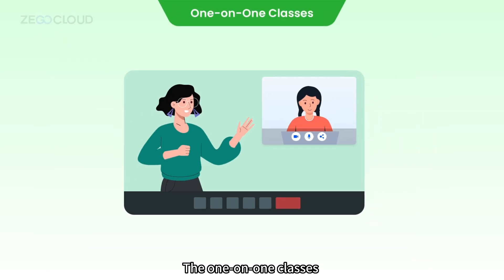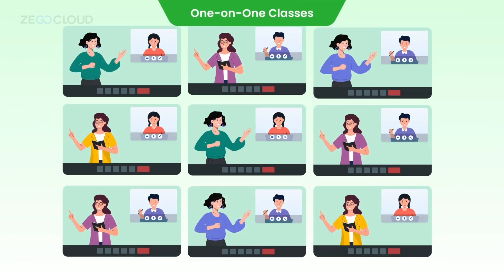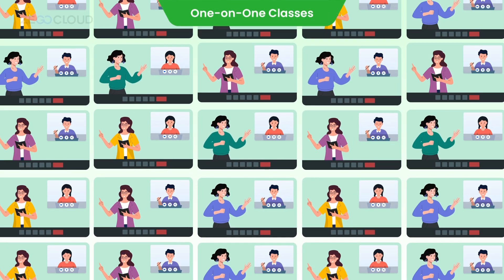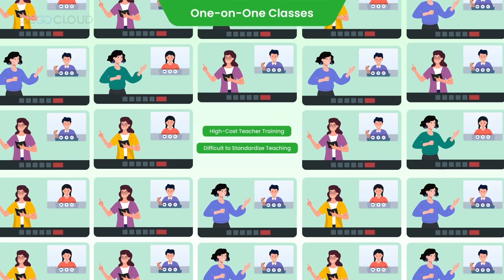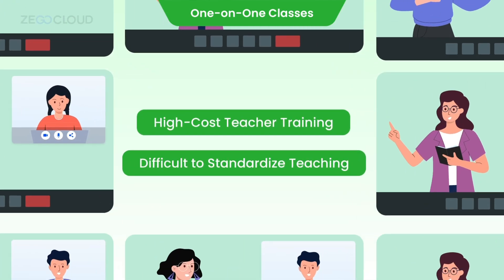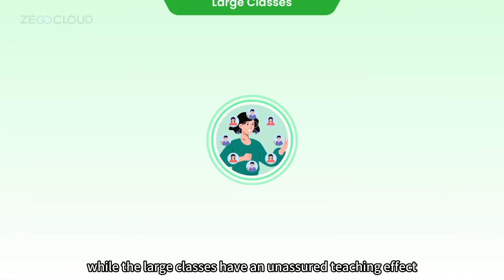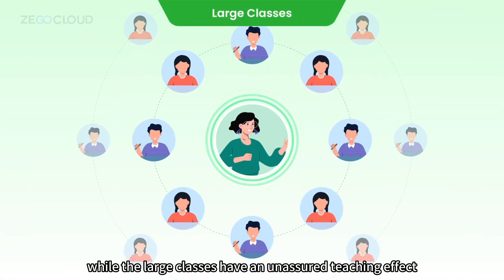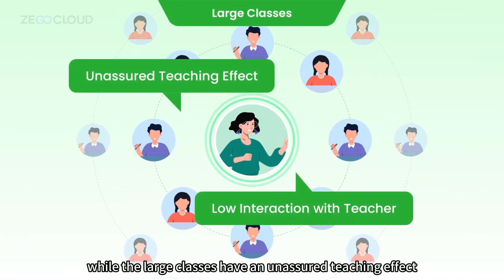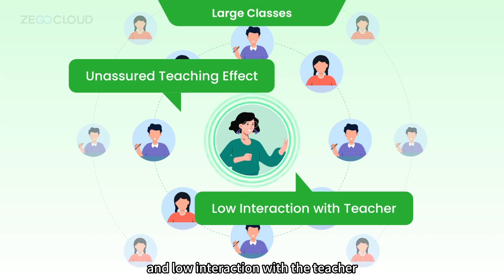The one-on-one classes require high-cost teacher training, and it is difficult to standardize teaching, while the large classes have an unassured teaching effect and low interaction with the teacher.